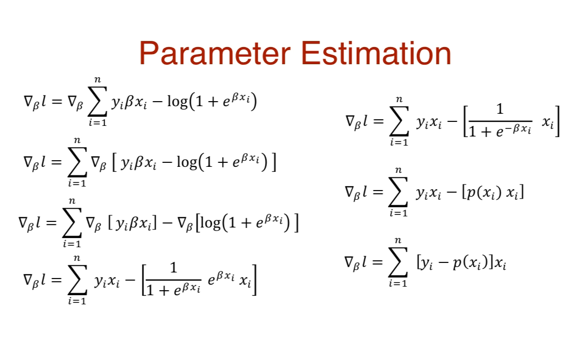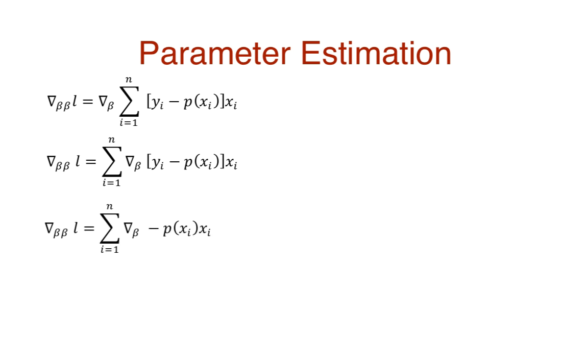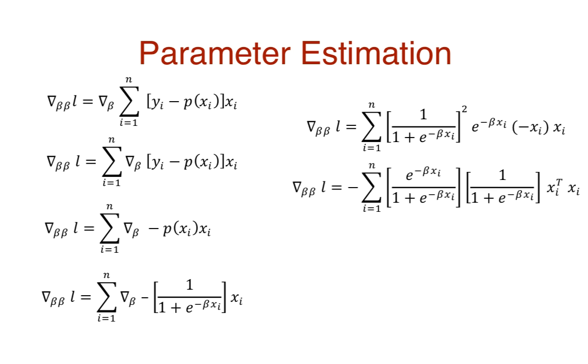So this is the numerator term of the Newton-Raphson equation. Now we compute the denominator term called the Hessian matrix. This is a matrix of second order derivatives with respect to beta coefficients. It is essentially the gradient of the previous equation. We bring the gradient into the summation. Remove y as it is independent of beta. Replace p(x) with its beta equivalent. Apply the gradient. Take the negative sign out. And replace it back with p(x).